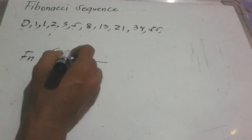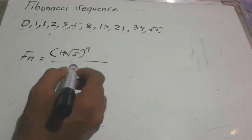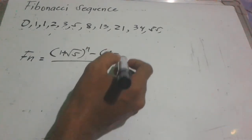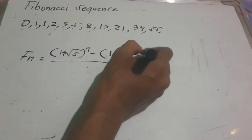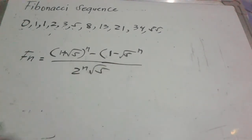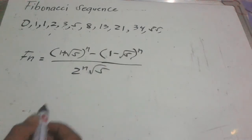F sub n is equal to: quantity (1 plus square root of 5) raised to n, minus quantity (1 minus square root of 5) raised to n, all over 2 raised to n times square root of 5. That is the exact formula to get the terms of the Fibonacci sequence.